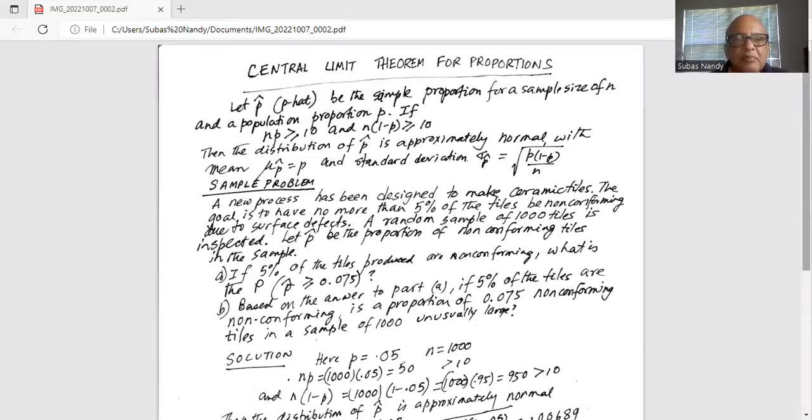Central Limit Theorem for Proportions: Let p hat be the sample proportion for a sample size of n and a population proportion p. If n times p is greater or equal to 10, and n times 1 minus p is also at least 10, then the distribution of p hat is approximately normal with mean μ p hat equal to p, and standard deviation σ p hat equal to square root of p times 1 minus p divided by n.